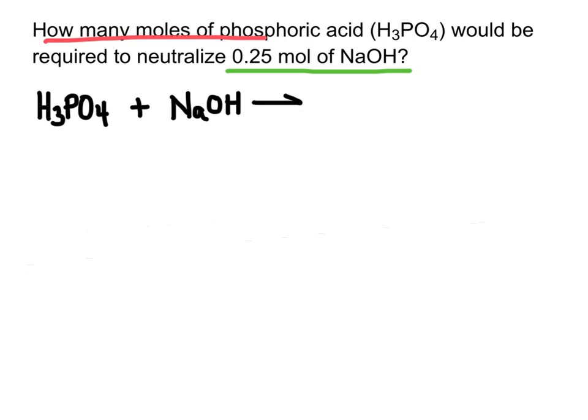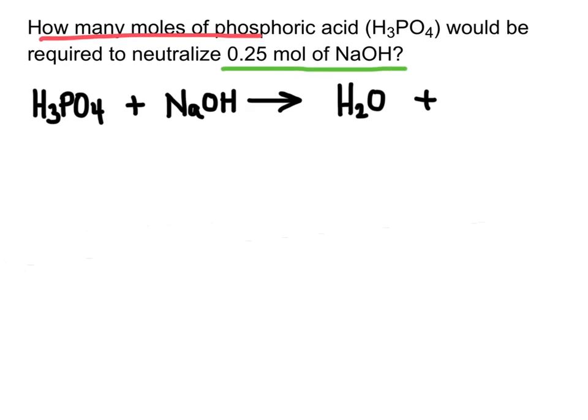Now, this is a tri-protic acid, which means this has three hydrogens. We'll still do the same thing, where they're going to switch place those hydrogens with that sodium. We end up with water and a salt, so I'm going to have my H2O, plus I'll have sodium combining with the phosphate ion, that's PO4.